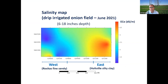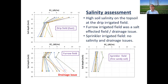This map shows EC for an onion field under drip irrigation. One key issue in the desert is high variability within a single field. In the west side of this field, there's no salinity issue, but in the east side there is. A grower needs to recognize this — leaching is needed on the east side but not the west side — and manage accordingly.